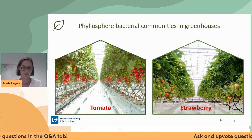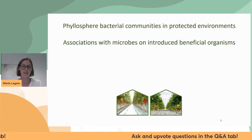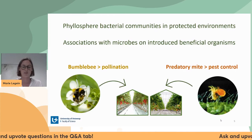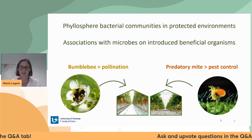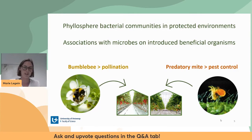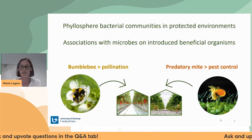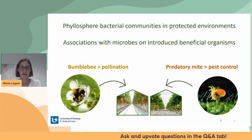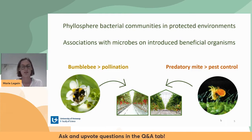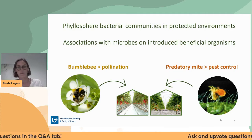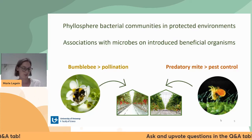I focus on the greenhouse phyllosphere bacterial communities of tomato and strawberry crops. I also looked at associations with beneficial organisms introduced into greenhouses: bumblebees for pollination, and predatory mites for pest control — for example, to control spider mites. There are also other organisms frequently introduced in greenhouses to combat pests or pollinate crops.